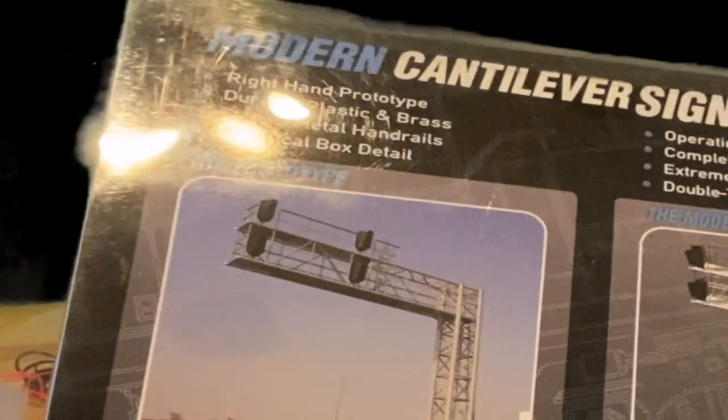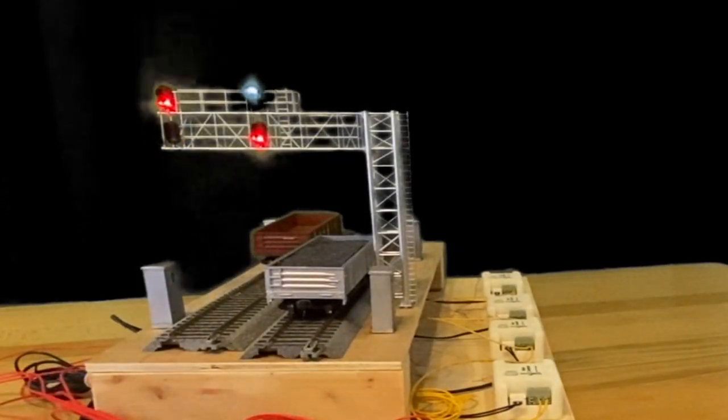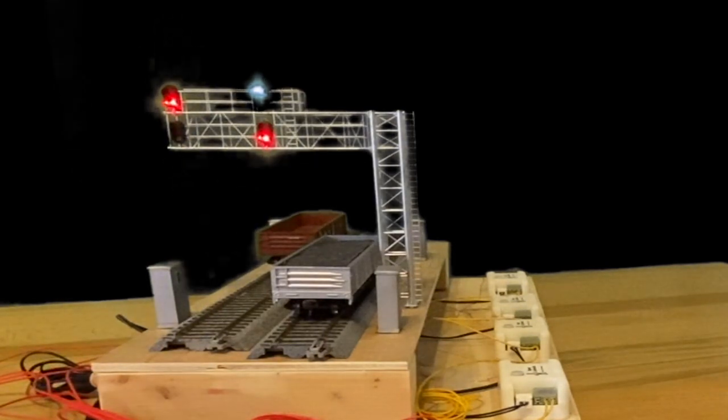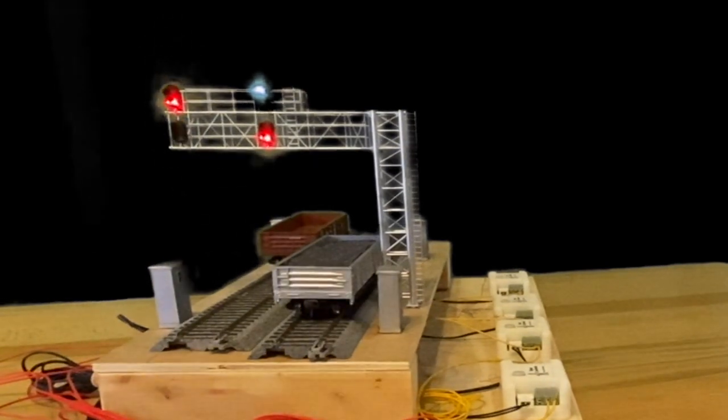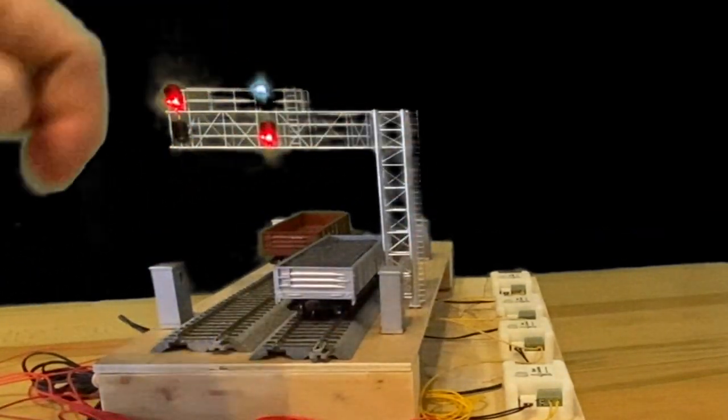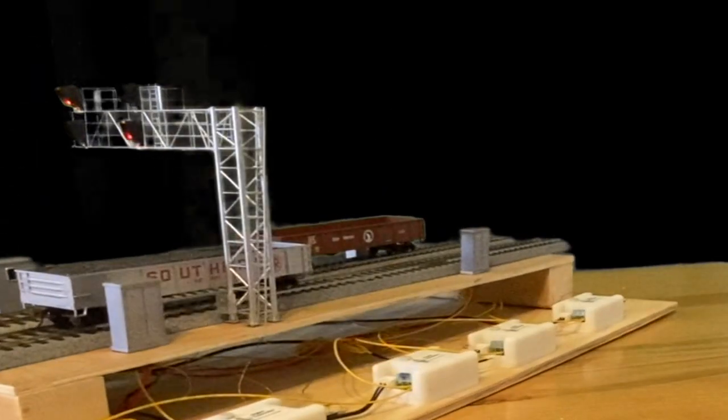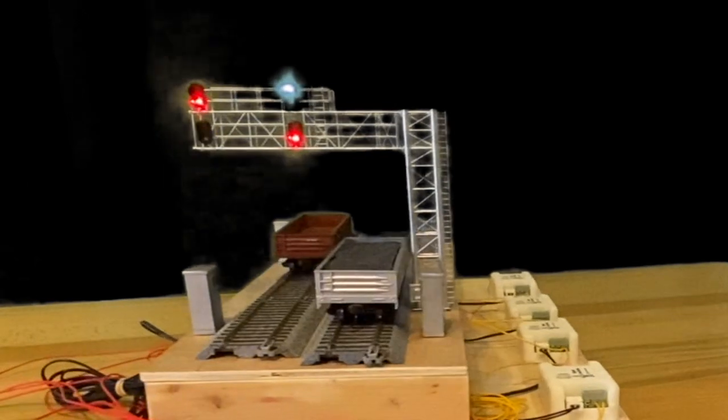Here's the packaging from BLMA. This model number for the cantilever bridge is 4031 and comes in a big plastic box. We took it out and drilled four holes using a template. We have a base that we put this on so we can model and show you the whole configuration.